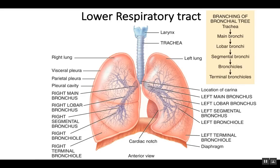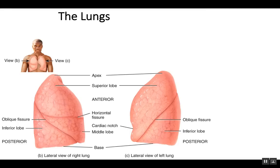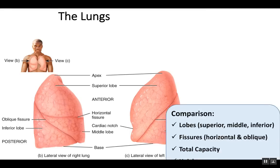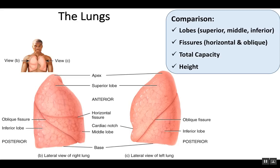You'll also notice that there's a notch in the left lung. This notch is for the heart to be positioned, so the left lung is actually a bit smaller in volume because of this cardiac notch. And then we see the diaphragm, the primary respiratory muscle, which will flatten when you inhale — going down on inhalation and back up on exhalation. Other differences between the right and left lung include the lobes: the right lung has three lobes, the left lung has two.